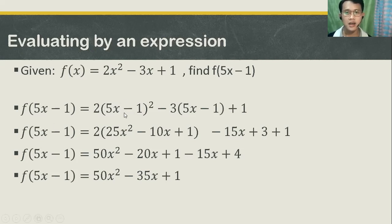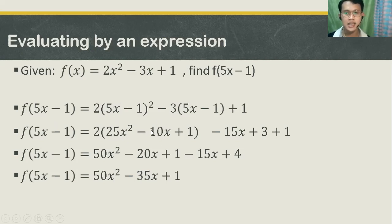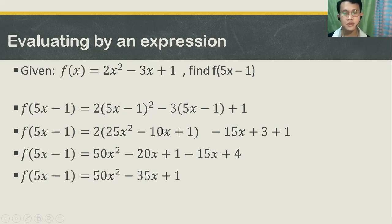You are going to perform first the quantity of 5x minus 1 squared — this is squaring a binomial. You need the square of the first term: 5x squared, that is 25x squared. Copy the sign since this is negative. How did you get 10x? That's basically 5x times 1, so that's 5 times 1, which is 5, times 2 — so 5 times 2, you get 10. Minus 10x, copy the variable x. Plus 1, because negative 1 squared equals 1.